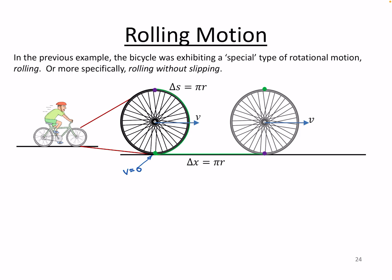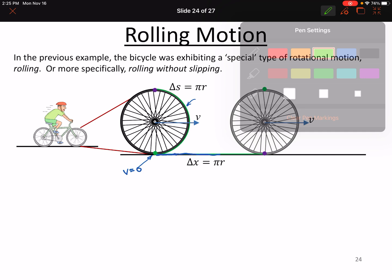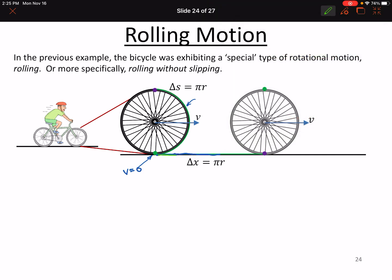When that happens, if you coated the tire in green paint — so this whole section is actual wet green paint — and you went through half a rev, you'd leave a painted line on the ground in green that was exactly the same length as the arc length you traveled along the wheel.